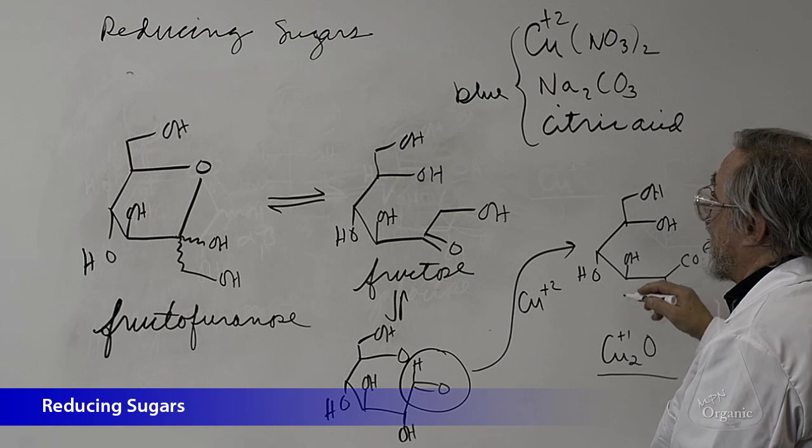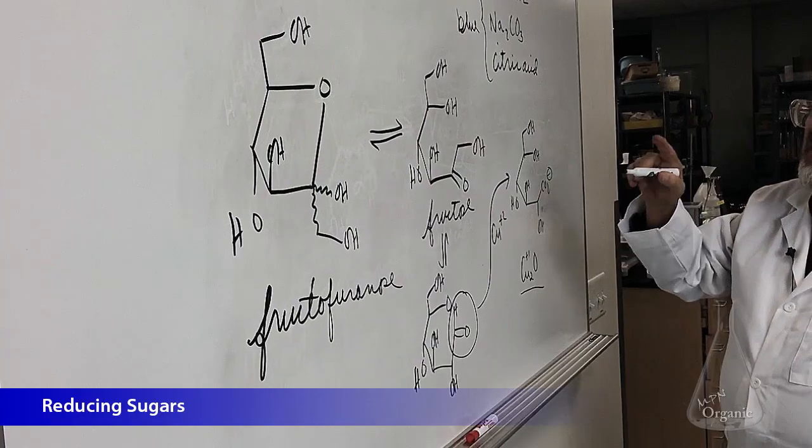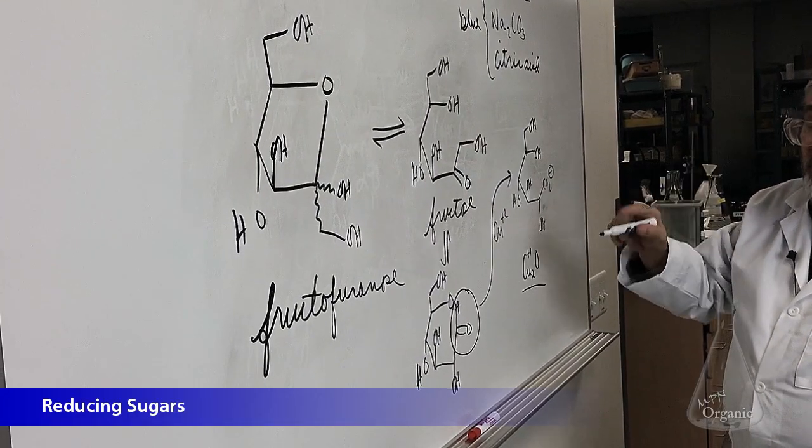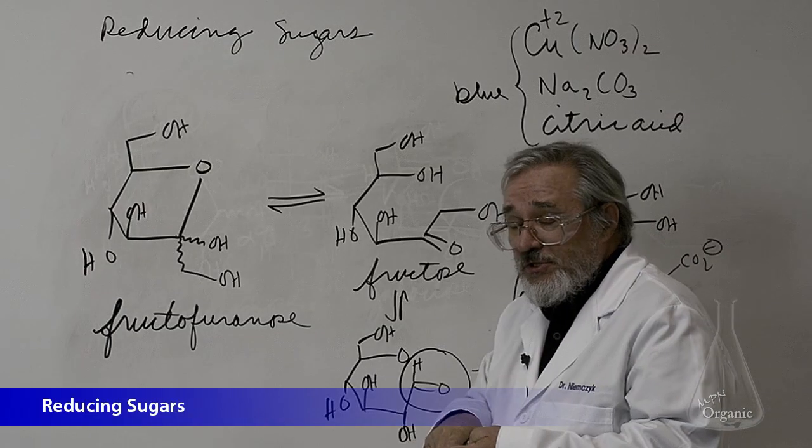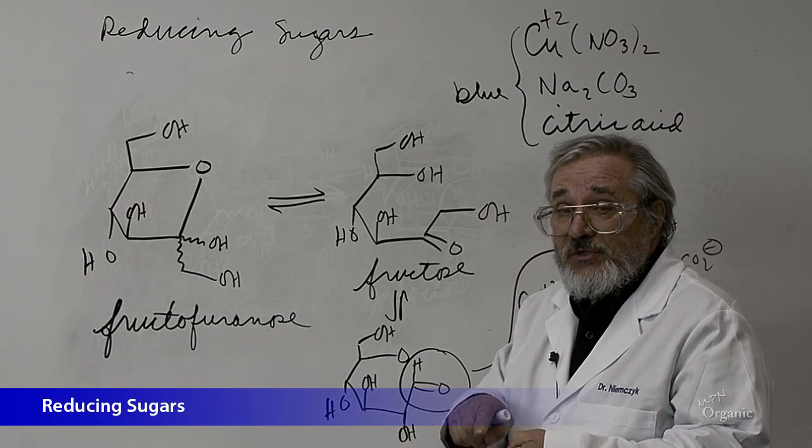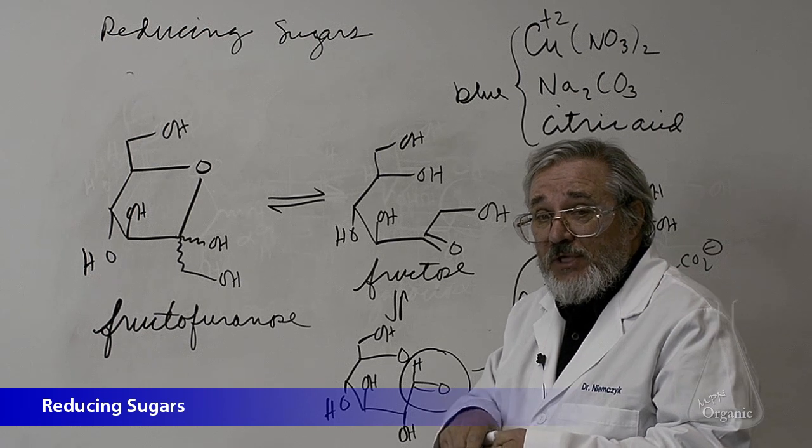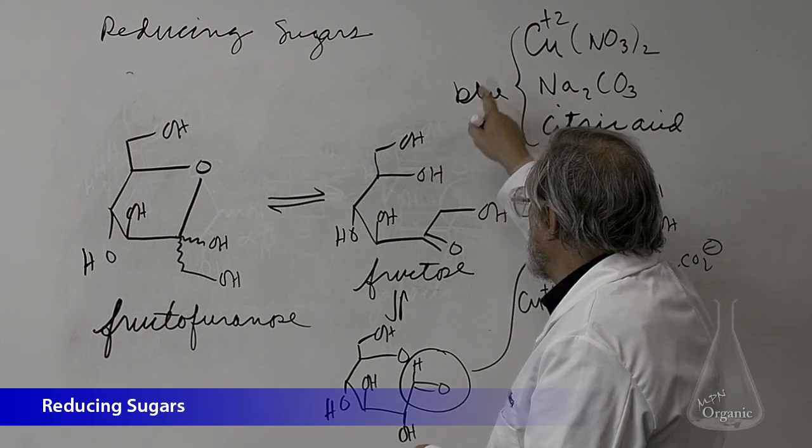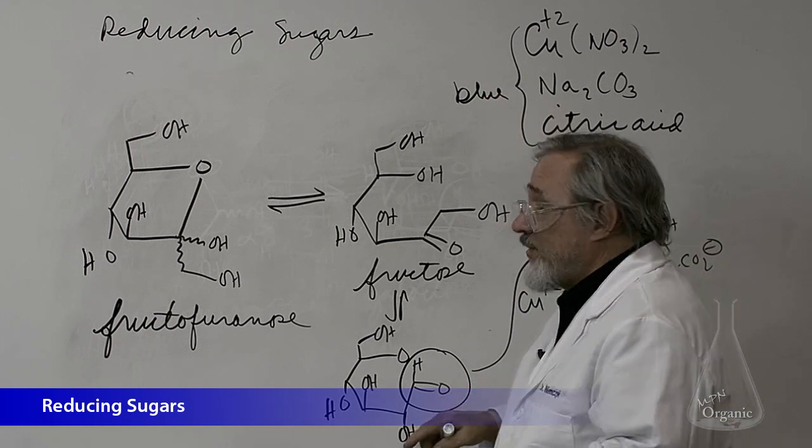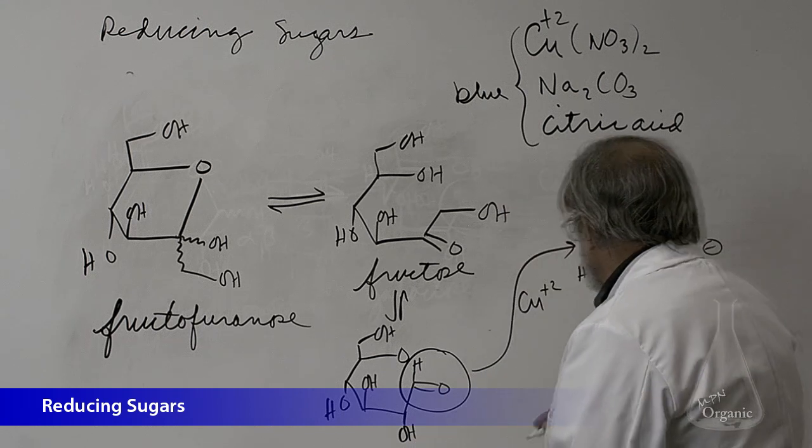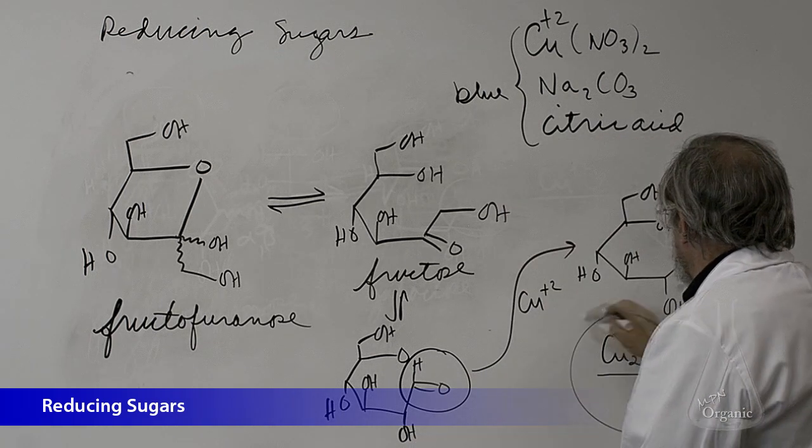And so we say that fructose is also a reducing sugar. Galactose and glucose are reducing sugars. Why? Because they reduce the copper plus two ion in Benedict's to copper one, which shows itself up as a brick red solid.